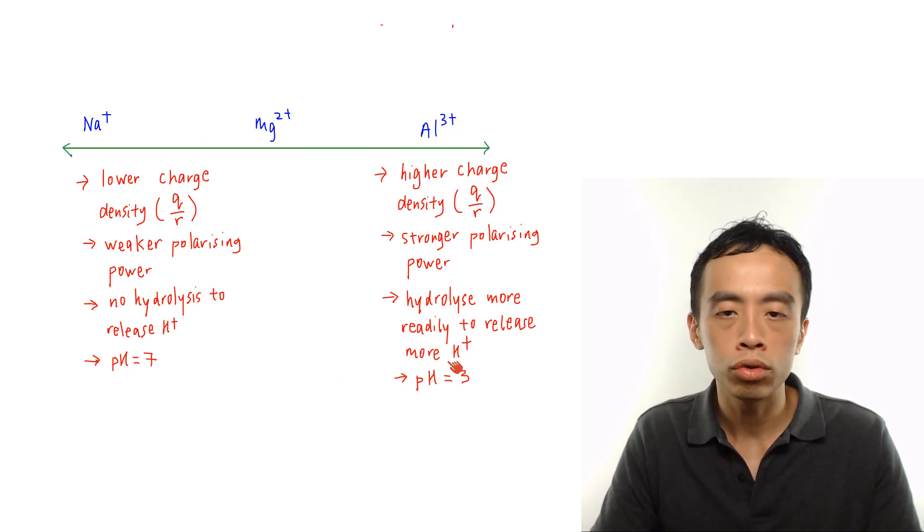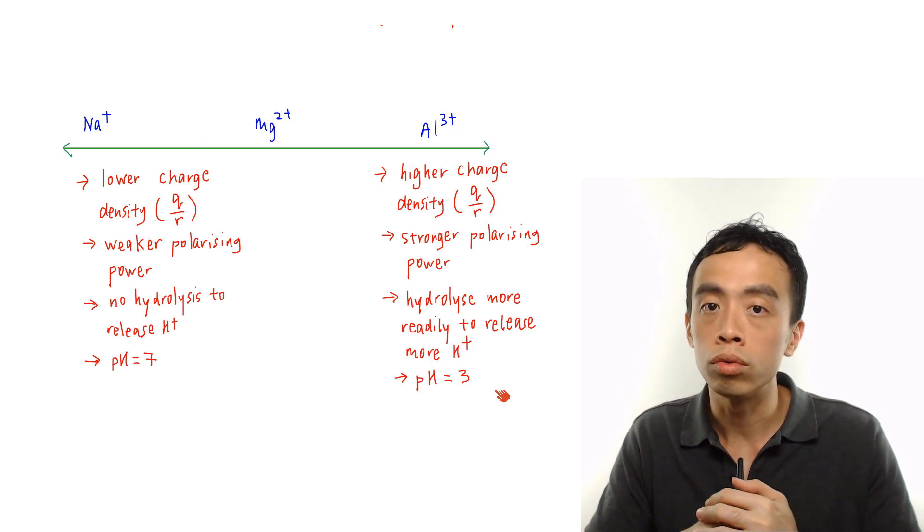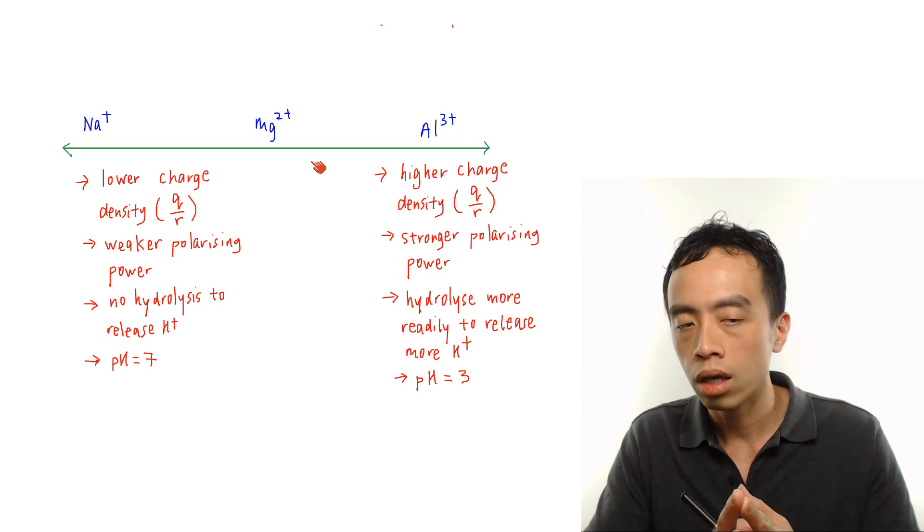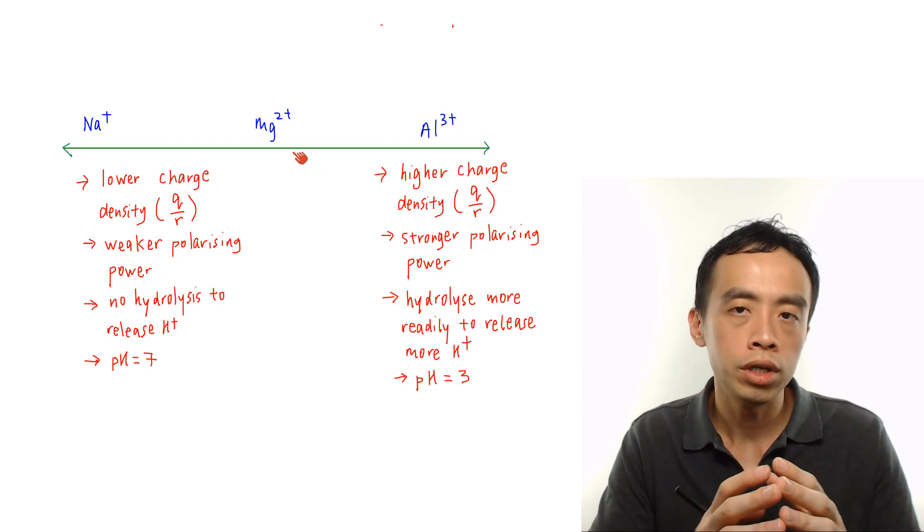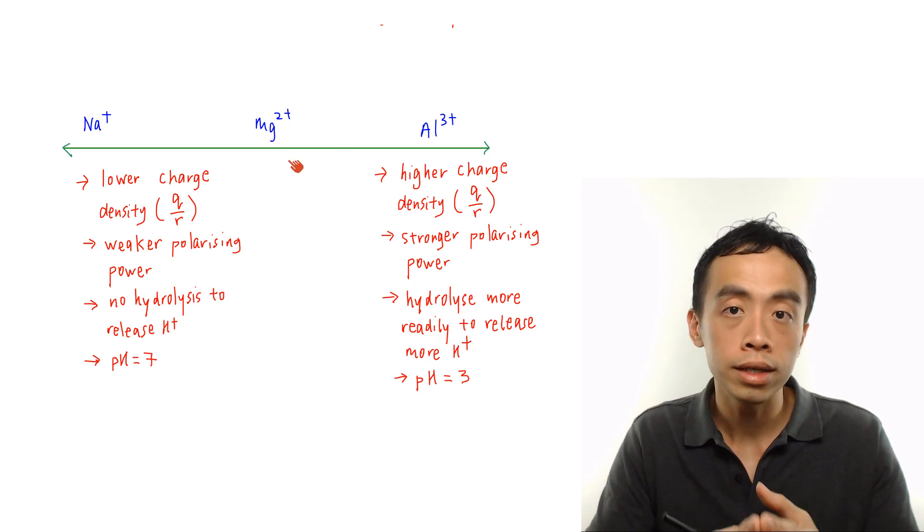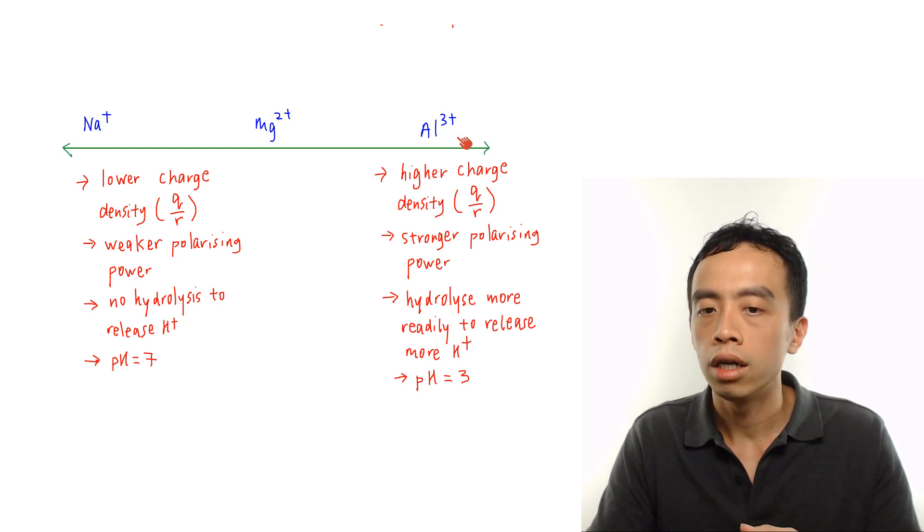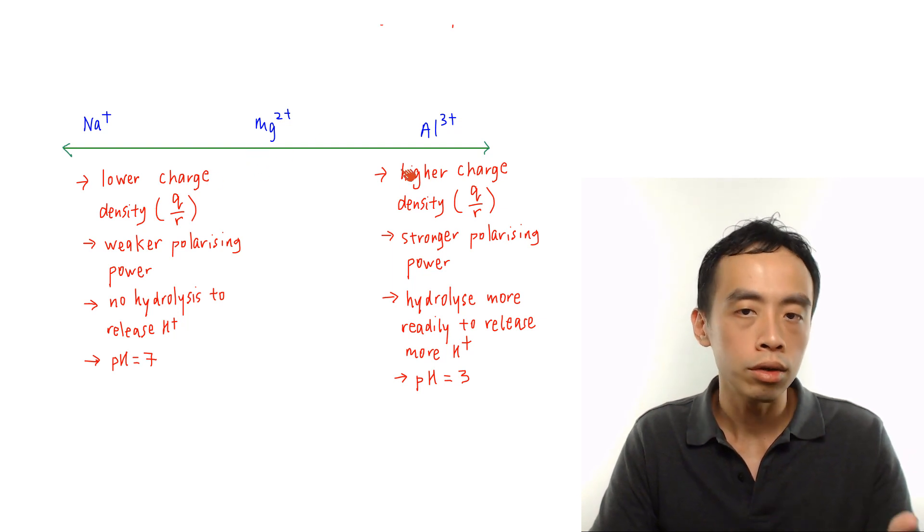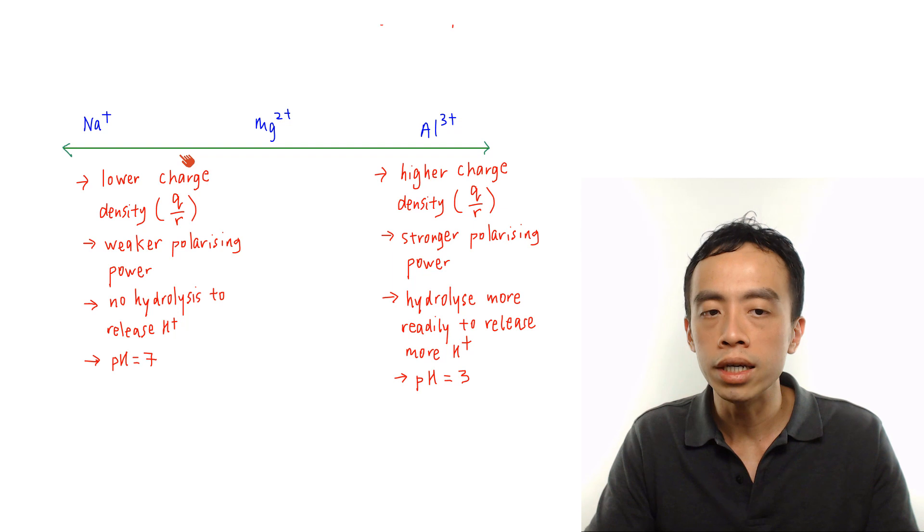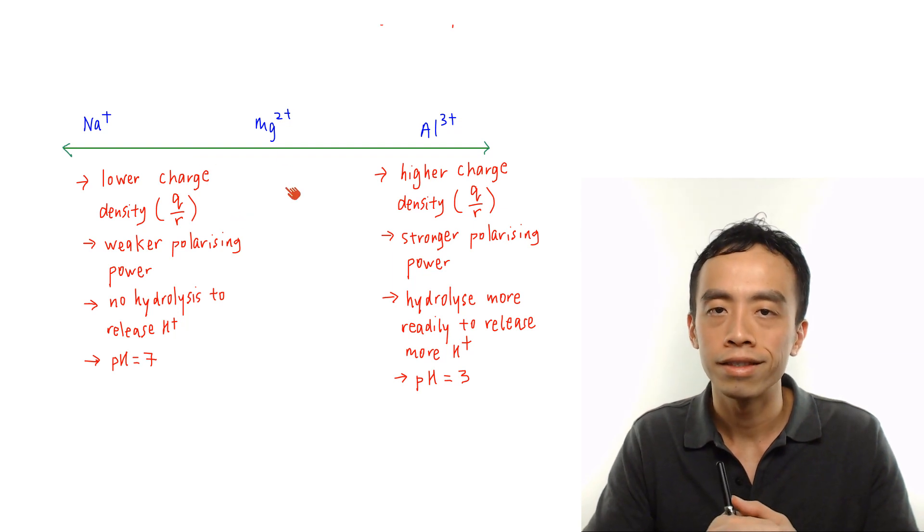pH for Al3+ is roughly about pH equals to 3. So Mg2+ is somewhat in the middle, and we say that Mg2+ the pH will be roughly about 6. Slightly acidic, but it is less acidic than Al3+ because it has a lower charge density than Al3+, less polarizing, so less H+ will be released by Mg2+.